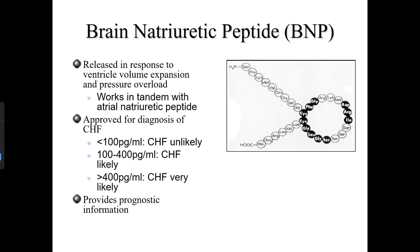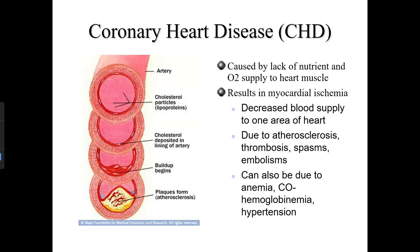Coronary heart disease is caused by a lack of nutrients and oxygen supply to the heart muscle. The heart, as a muscle, requires its own blood supply through coronary arteries on the surface of the heart. When those arteries become blocked with plaques, the condition is known as ischemia.